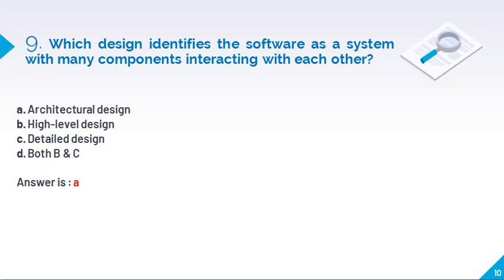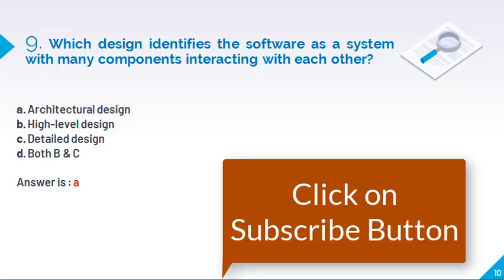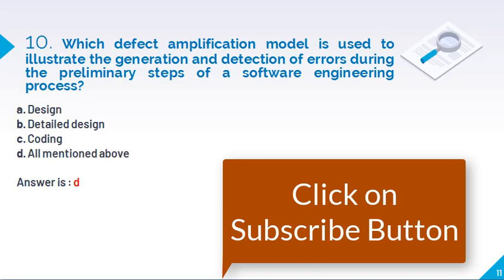Which design identifies the software as a system with many components interacting with each other? Architectural design. So architectural design, because whenever we have to interact with the different hardware or the software, we have to design architectural view of particular system. So we can easily work on them. Also we can get the information from the different devices.